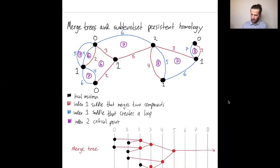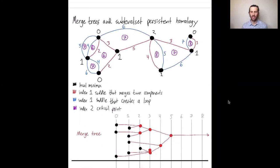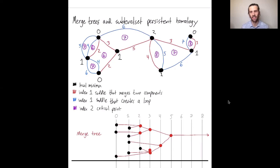Let me move now to the comparison with sublevel set persistent homology. I've explained how the merge tree looks in this example. The black points correspond to local minima, the red edges contain saddle points that merge connected components, the blue edges contain saddle points that instead create loops, and the purple points are index-two saddle points — maxima in this example — that fill loops. You'll notice that the red edges form what's called the minimal spanning tree: if you want to connect all the minima as cheaply as possible, where the price for each edge is the number labeled on it, the minimal spanning tree is the cheapest way to do that, and it's drawn in red.